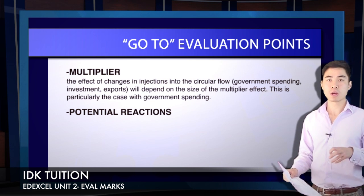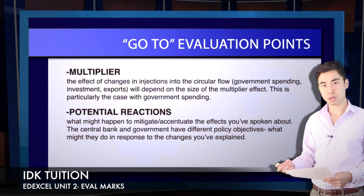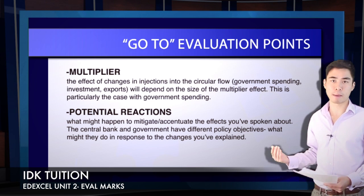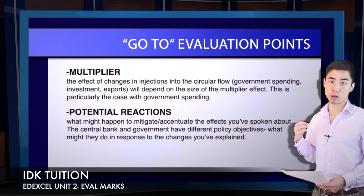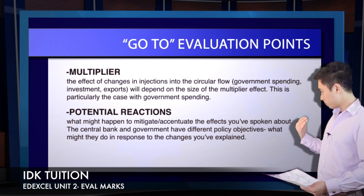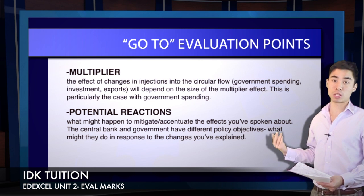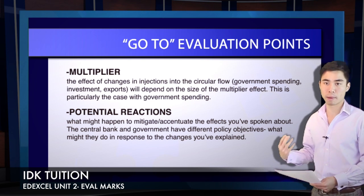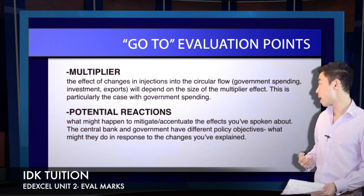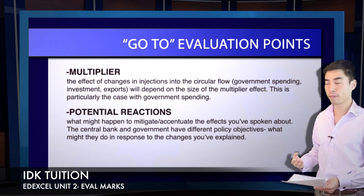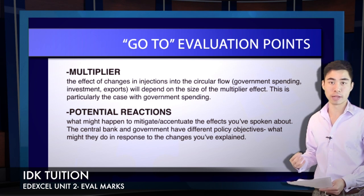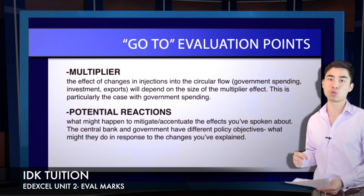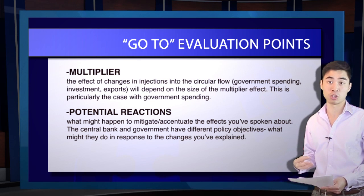Finally, potential reactions. Say you're looking at fiscal policy and the government cuts back on government spending or increases taxation — that's contractionary fiscal policy. You know real GDP is going to fall and the price level is going to fall. In terms of potential reactions, you want to talk about reactions on the monetary side. If economic growth is stagnating and inflation is falling as a result of this contractionary fiscal policy, the central bank may intervene and reduce interest rates to stimulate the economy.